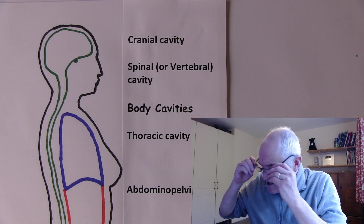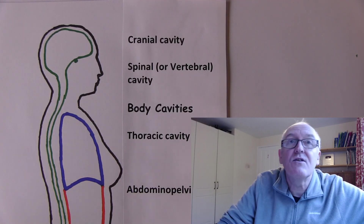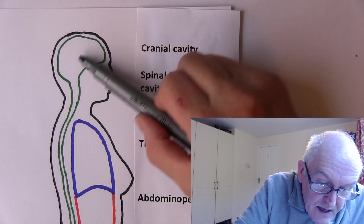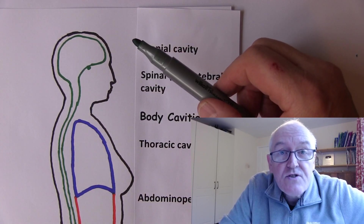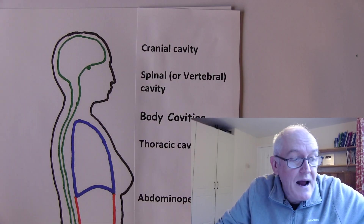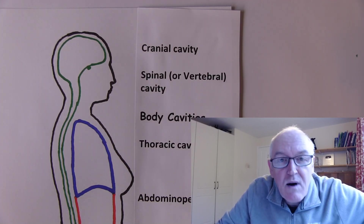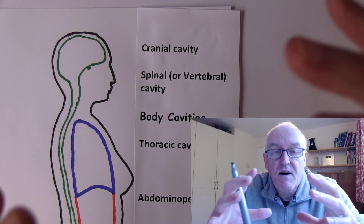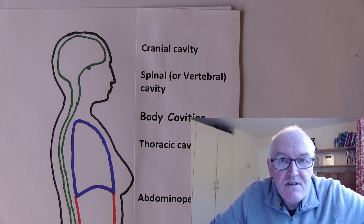Starting at the top, we have the cranial cavity. The cranial cavity contains the brain and also the meningeal layers that surround the brain. It is surrounded, defined, and compartmentalised by the cranial bones.